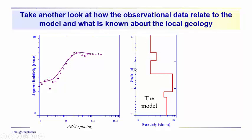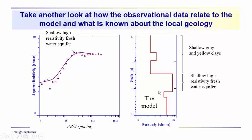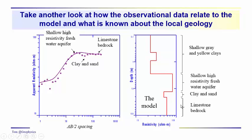We have resistivity depth on this axis. We have AB over 2 spacing on this axis — it's not depth. And then we have the apparent resistivity over here, with the resistivities on a log scale. We're out to 100 here and at 10 over here. These are shallow gray and yellow clays; we have the high resistivity freshwater aquifer; we have the sandy clay zone; and then we have the limestone bedrock. Hopefully you're beginning to make a connection between these two data sets. The interpretation of this data set led to this initial starting model.